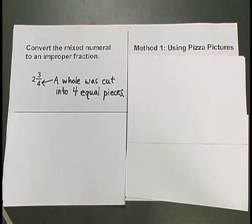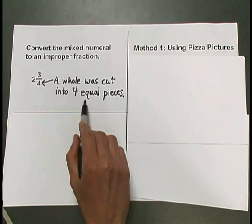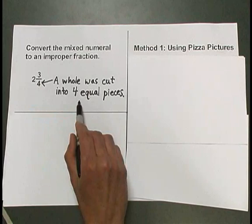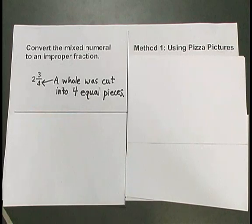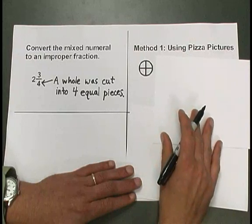Each pizza will represent one whole. And because our fraction came from a whole that was cut into 4 equal pieces, we want each one of our pizzas cut into 4 equal pieces.